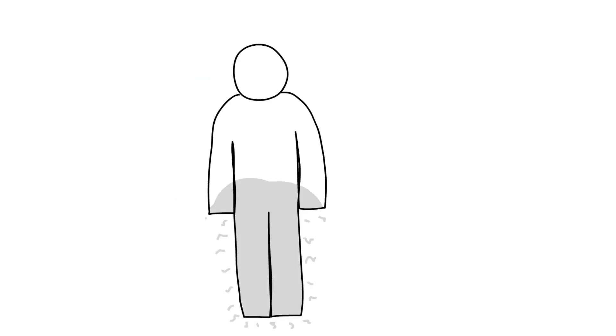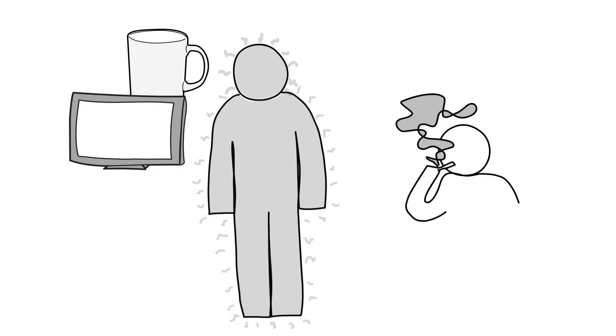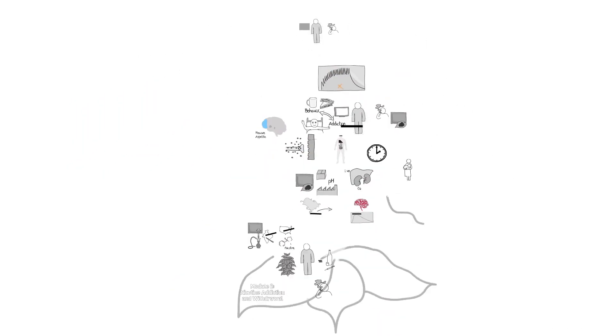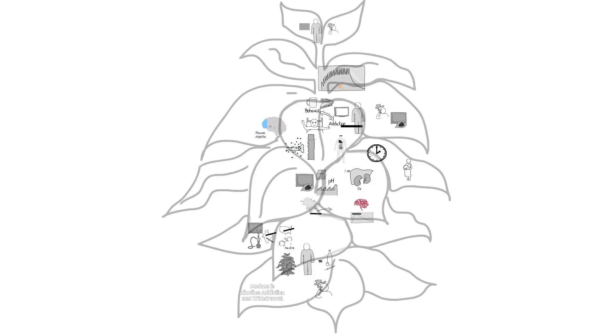In closing, tobacco use involves a physiological addiction to nicotine as well as patterns of behavior. Both are critical to address when treating a patient for tobacco dependence. It's important to understand the interaction of external and internal factors that contribute to tobacco use. The next video will discuss the health consequences of tobacco use and the benefits of quitting in more detail.